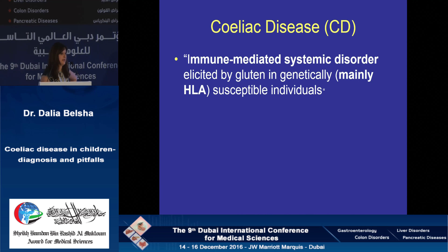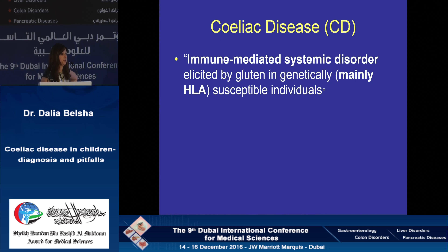Celiac disease, as we know, is an immune-mediated systemic disorder — so it's not only a GI disorder. It is elicited by exposure to gluten, mainly the gliadin part of the gluten, in genetically susceptible patients. These are patients who have HLA-DQ2 — 95% of patients are HLA-DQ2 positive, and 5% are HLA-DQ8 positive. So if you don't have HLA-DQ2 or DQ8, you will not have celiac disease.